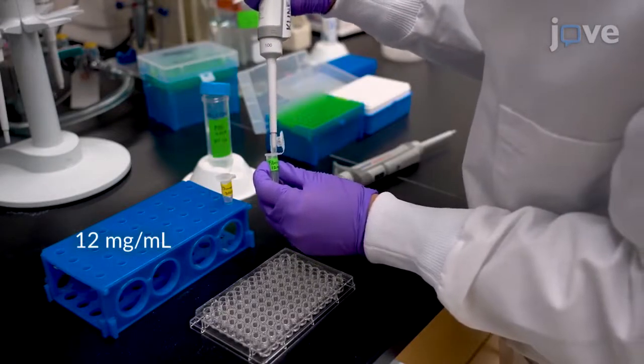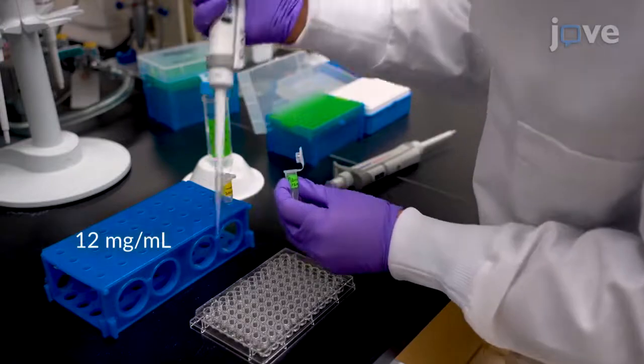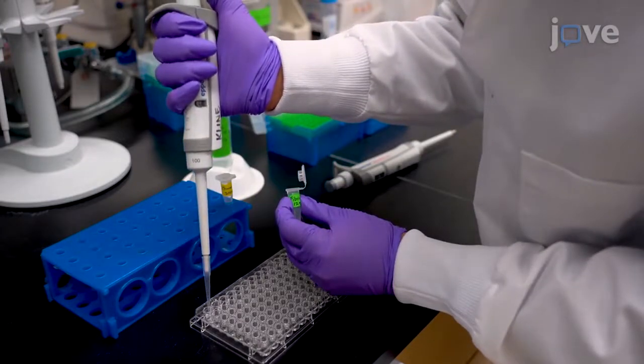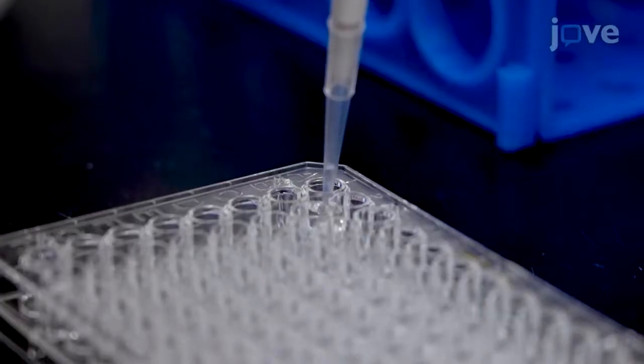Immediately initiate clotting by adding 50 microliters of fibrinogen to the well and pipette up and down five times using only the first stop of the pipette, taking care to avoid creating bubbles.